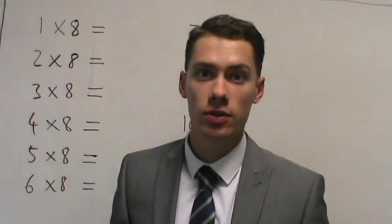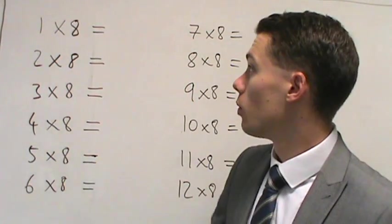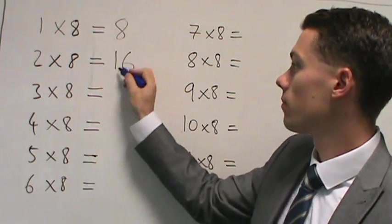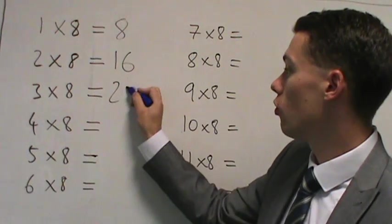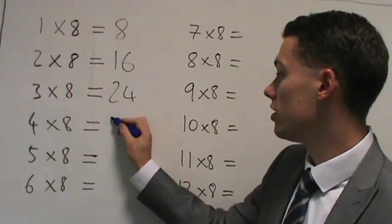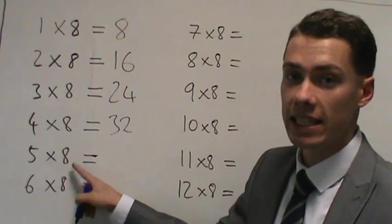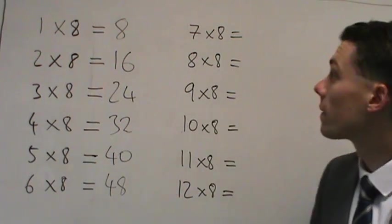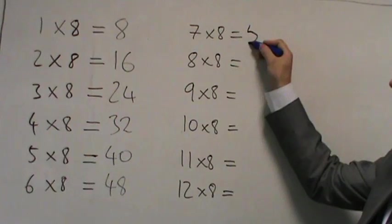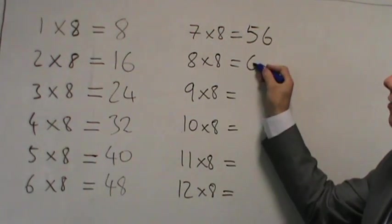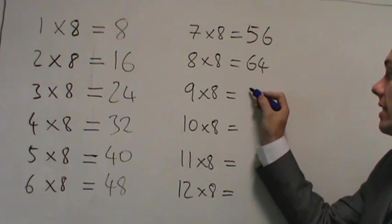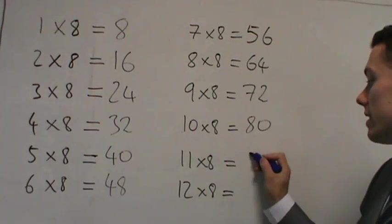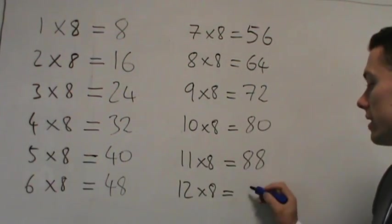Learning our 8 times tables. So let's go through it once together. 1 times 8 is 8. 2 times 8 is 16. 3 times 8 is 24. 4 times 8 is 32. 5 times 8 is 40. 6 times 8 is 48. 7 times 8 is 56. 8 times 8 is 64. 9 times 8 is 72. 10 times 8 is 80. 11 times 8 is 88. And 12 times 8 is 96.